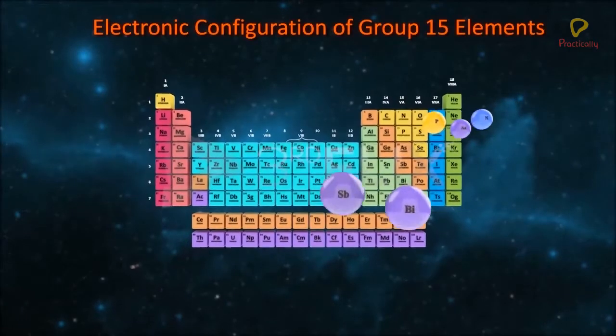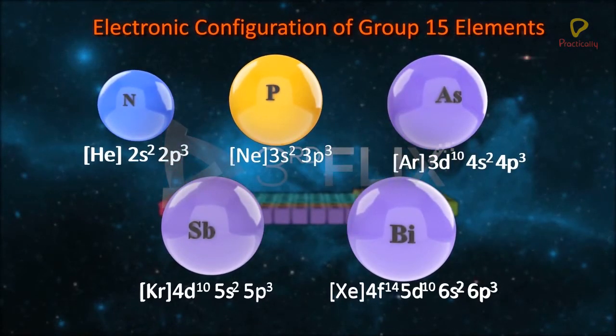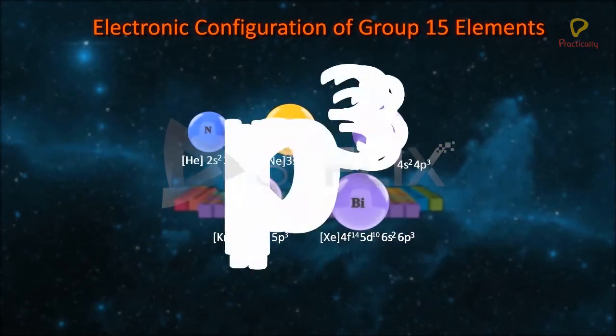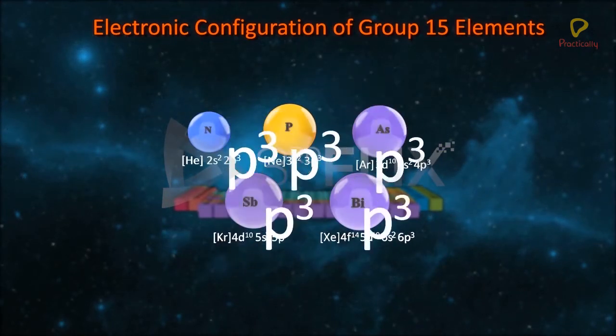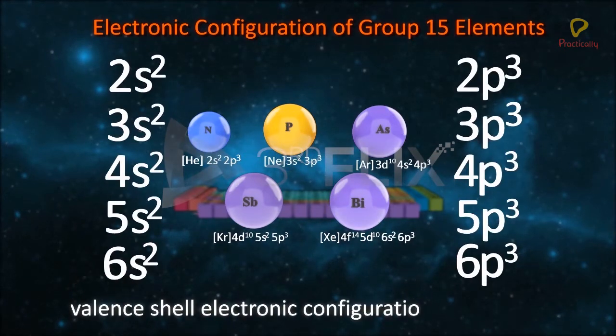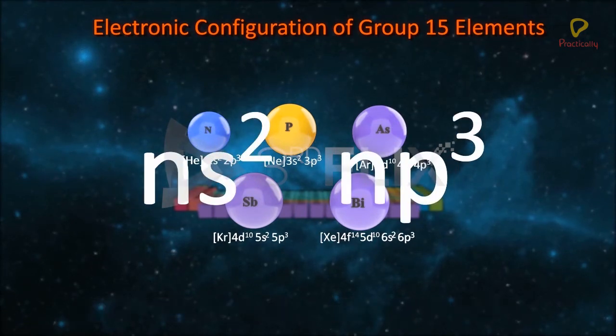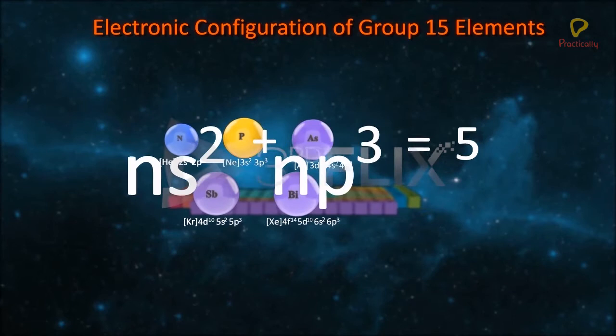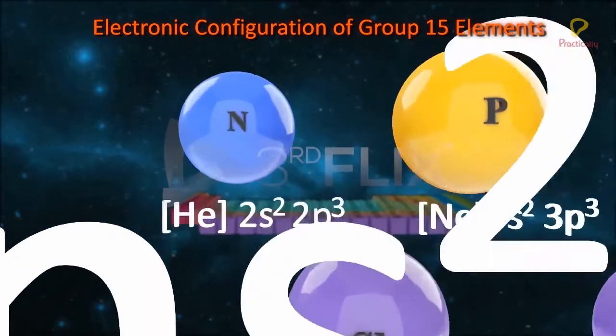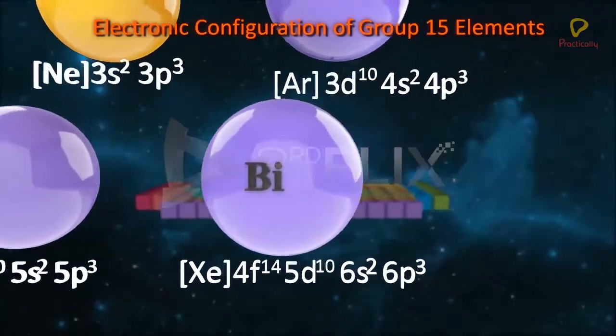Electronic Configuration of Group 15 Elements: In Group 15 elements, the differentiating electron enters the np subshell. The valence shell electronic configuration of these elements is ns2 np3. So, the valence shell of these elements contains 5 electrons. Here are the electronic configurations of Group 15 elements.